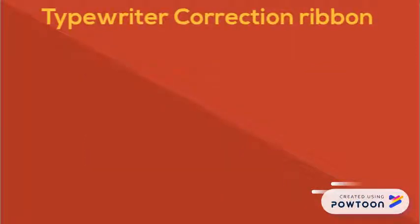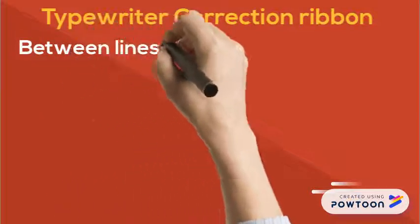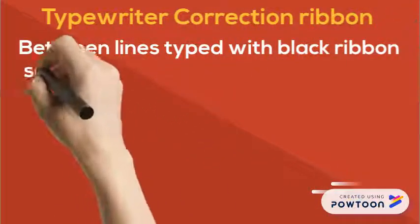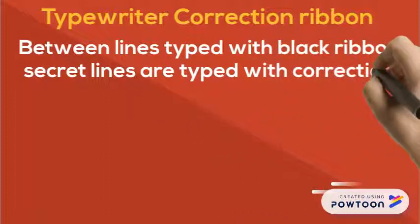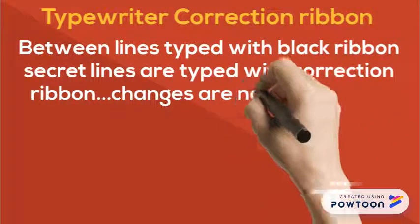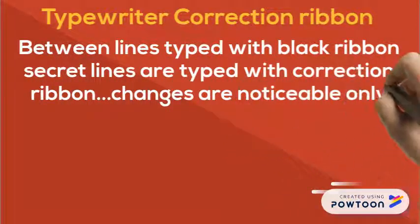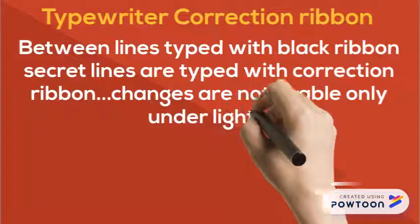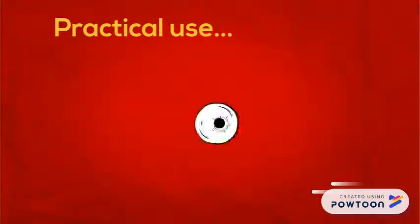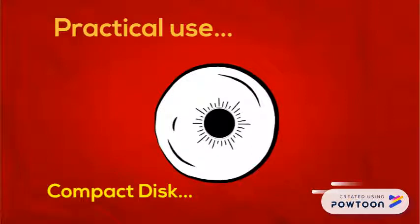Typewriter correction ribbon: between the lines typed with black ribbon, secret lines are typed with correction ribbon. The changes are noticeable only under strong light. The practical use of steganography is in compact discs, where data is stored in the form of sectors.